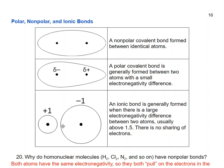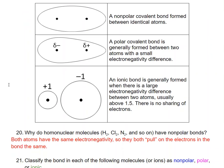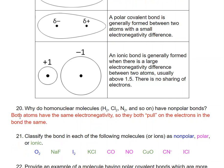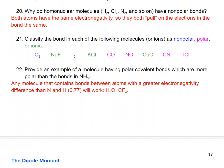Now we can talk about polar, nonpolar, and ionic bonds. A nonpolar covalent bond is formed between identical atoms. A polar covalent bond is generally formed between two atoms with a small electronegativity difference, whereas an ionic bond is formed when there's a large electronegativity difference with no sharing of electrons. Homonuclear molecules have nonpolar bonds because both atoms are identical with the same electronegativity, pulling on the electrons with the same strength. Ionic compounds — like NaF, KCl, and CuO — typically involve a metal and a nonmetal with a very large electronegativity difference.